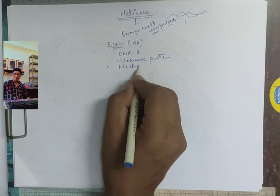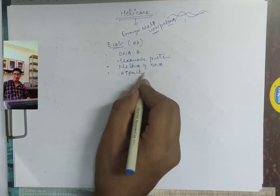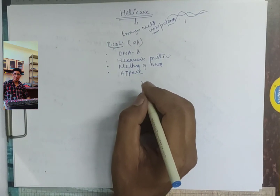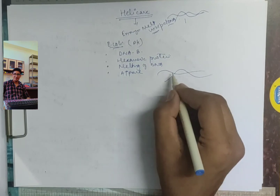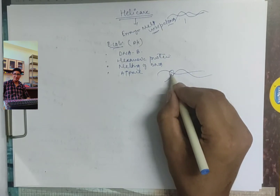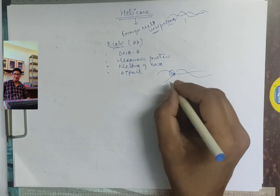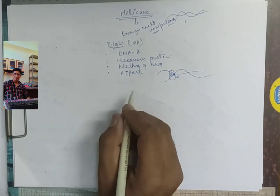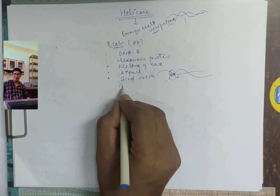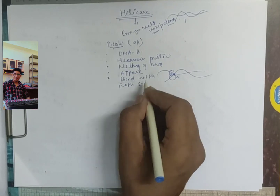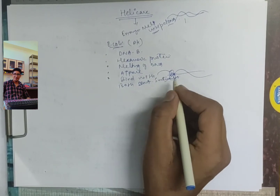This melting of DNA is ATP-dependent — it shows ATPase activity. Helicase binds with the single-stranded form of both strands of DNA simultaneously.